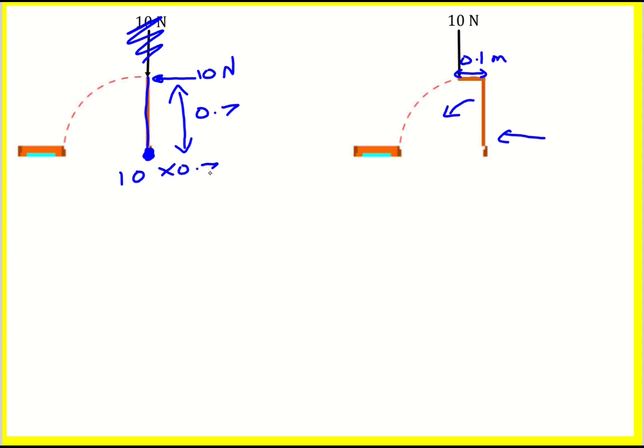I would just do 10 times 0.7, which is 7 Newton meters. I actually do the same here. It's just going to be 10 times the distance from the line of action, so if the line of action is down here, it's this distance here. So it would be 10 times 0.1, so I'd get 1 Newton meter.